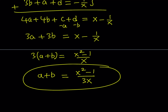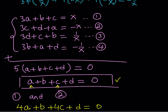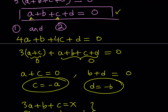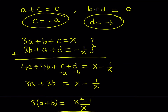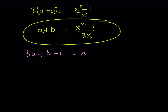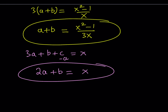Going back to equation 1 — 3A + B + C = x — and replacing C with negative A, I get 2A + B = x. So now I have two equations in A and B only: 2A + B = x and A + B = (x squared minus 1) over 3x.